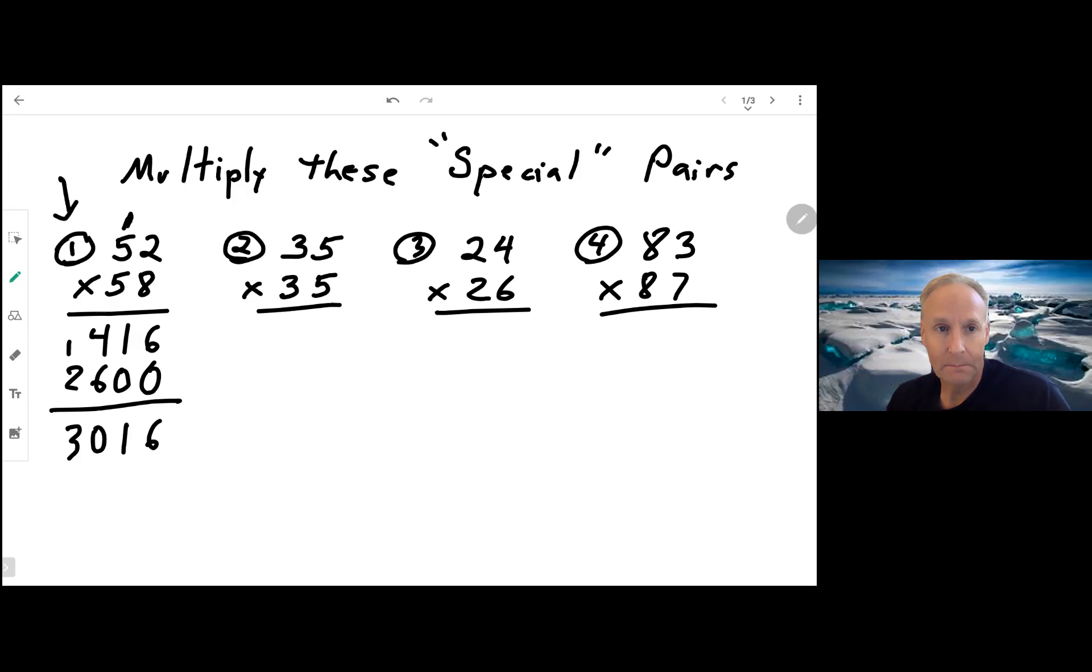Let's see if you did it. If you multiply these together, the second one right here, you should have gotten 1225. For this one, you should have gotten 624. And for this last one here, you should have gotten 7221. Here's the technique we're going to use. First of all, before we get into the special technique, let's go ahead and look at what makes these pairs special.